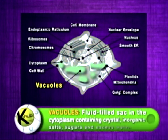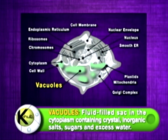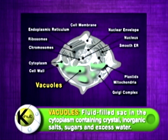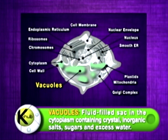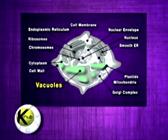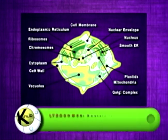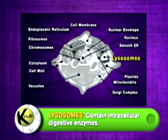Vacuoles are fluid-filled sacs in the cytoplasm containing crystals, inorganic salts, sugars, and excess water. Lysosomes contain intracellular digestive enzymes.